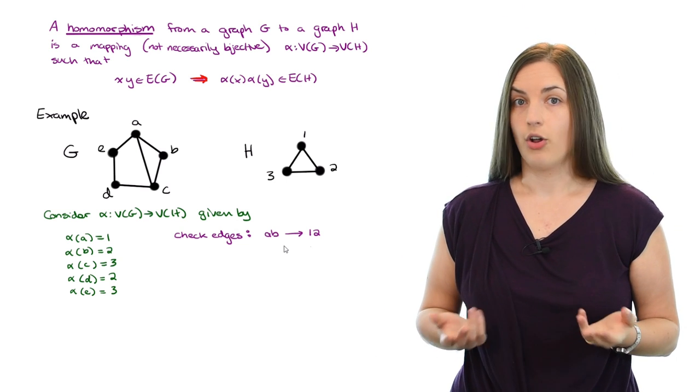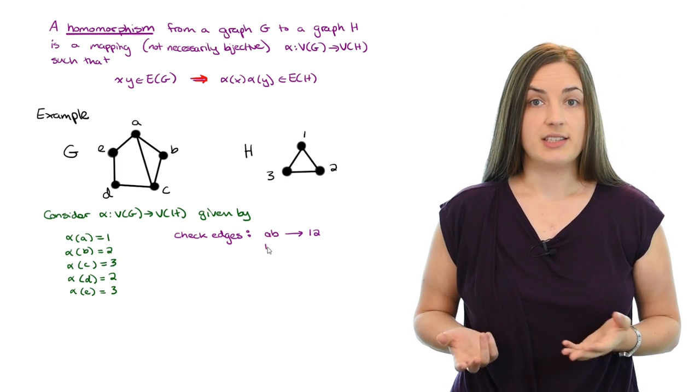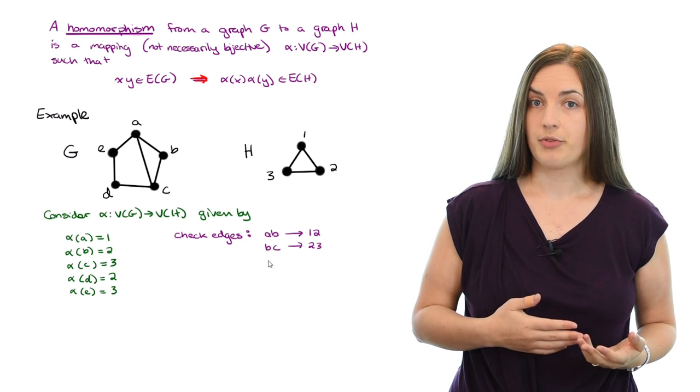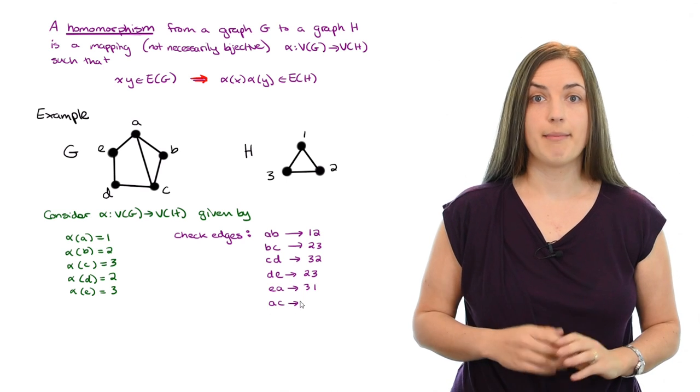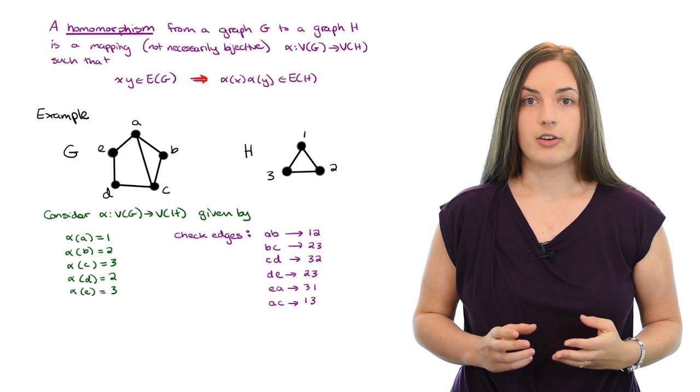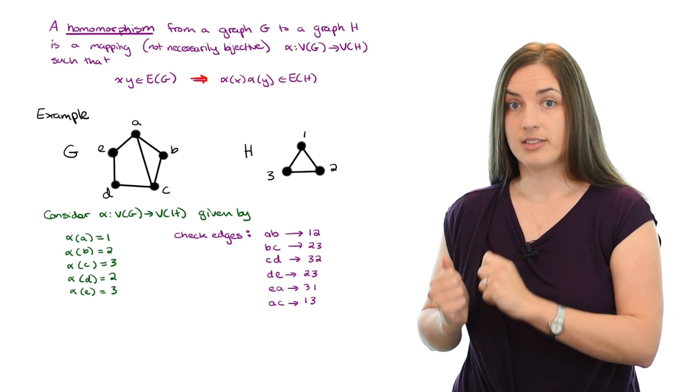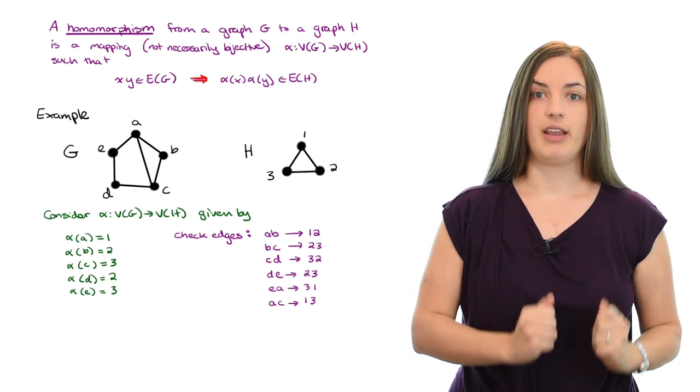Now we have to check all of the other edges. Edge BC gets mapped to edge 2, 3 and we can do the same thing for all of them. So I'll just write out all the edges and where they get mapped to. The important thing to notice is that every edge of G does indeed get mapped to an edge of H.